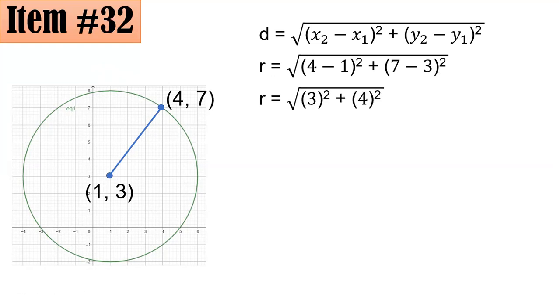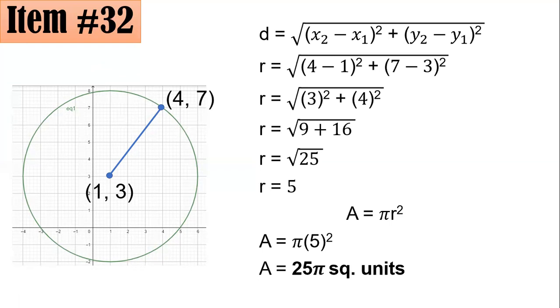4 minus 1 is 3 squared. So you have the square root of 3² + 4², that's 9 + 16, or 25. The radius is 5 units long. Knowing that the area is πR², by substitution, you have π × 5², which is 25π square units, letter A.